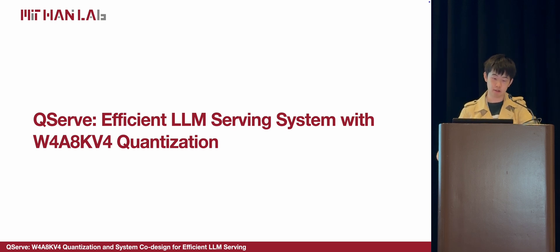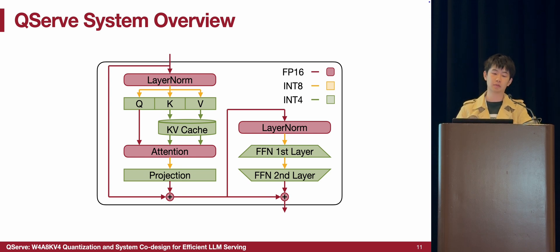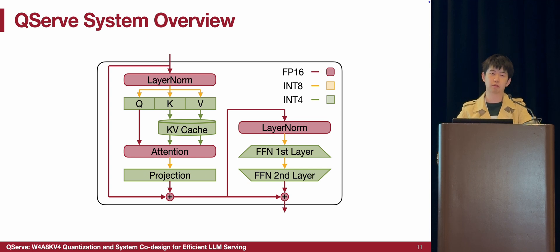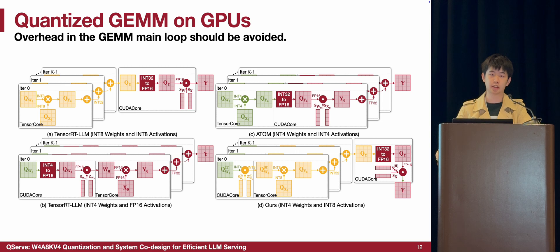Now let's talk about the system design of QServe — the efficient LLM serving infrastructure with W4A8KV4 quantization. First, here is a high-level overview of the system's precision data flow in QServe. After each decoder layer has been converted to 4-bit with W4 quantization, we also quantize the input activation of each linear layer to 8-bit per element, so we can perform W4A8 matrix multiplication. It is worth noting that we fuse the activation quantization into layers that precede the linear layers — for example, the layer norm — whenever possible, so that the quantization overhead for activations can be minimized.